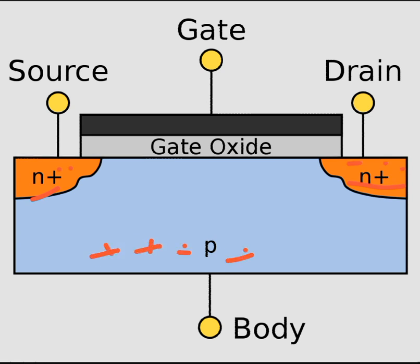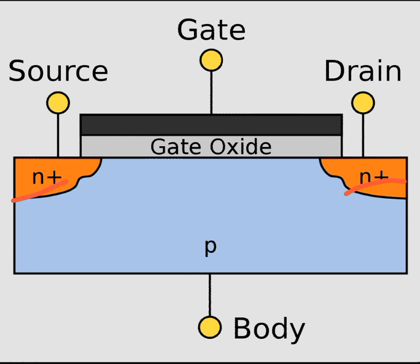There are plenty of holes in the P-type material. P-type material contains holes as majority carriers and electrons as minority carriers, whereas n-type material contains electrons as majority carriers and holes as minority carriers. There are four pins for the device: the body (the P-type substrate), the gate, the source, and the drain.